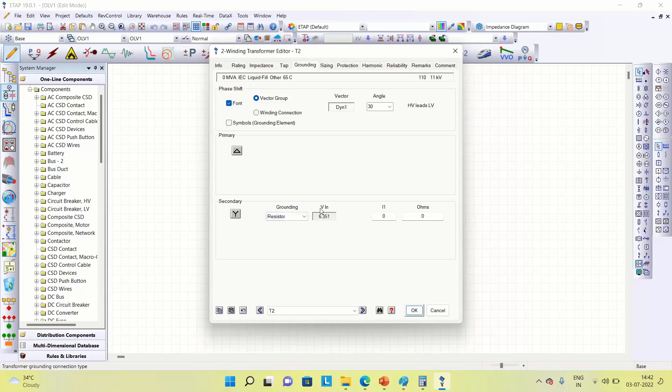Let's go to grounding: delta star, resistor grounding. You can see 6.351 volts, this is the phase voltage. We want to restrict the current to 400. The corresponding NGR required is 15.877 ohms.